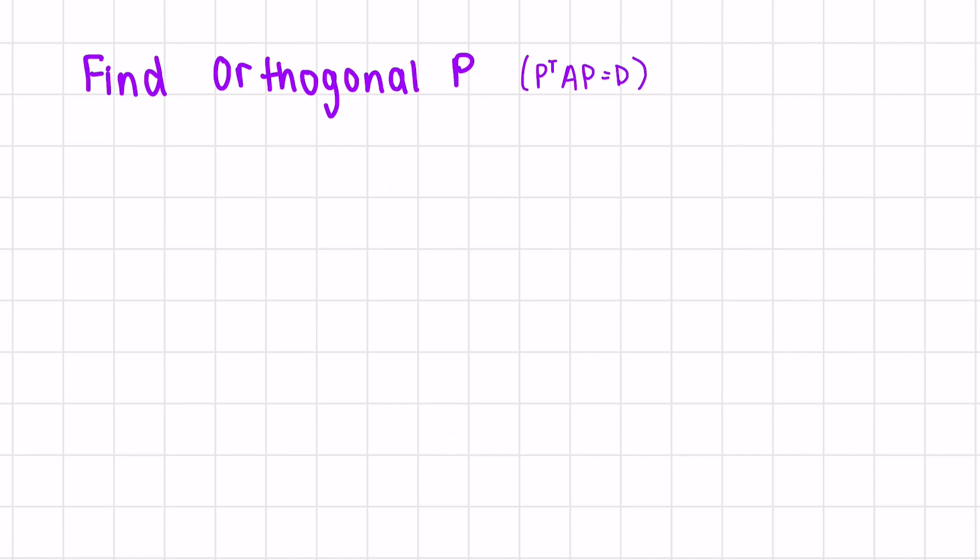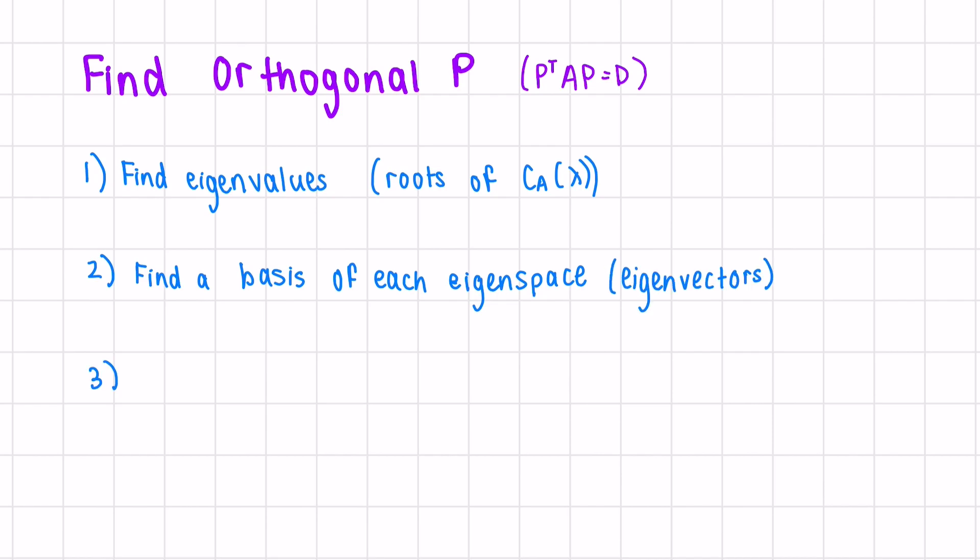If we're asked to find an orthogonal P, such that Pt or P inverse AP is a diagonal matrix, here are the steps to take. Start by finding the eigenvalues, which are the roots of the characteristic polynomial. Secondly, find a basis of each eigenspace. These will be comprised of the eigenvectors. Next, orthogonalize and normalize each basis. We can do this using the Gram-Schmidt algorithm. Lastly, we can build an orthogonal P and the corresponding D that is similar to our matrix A.